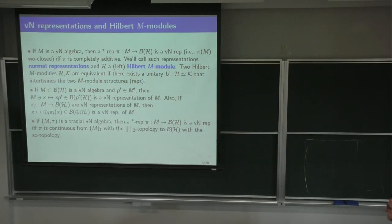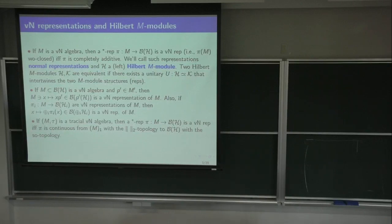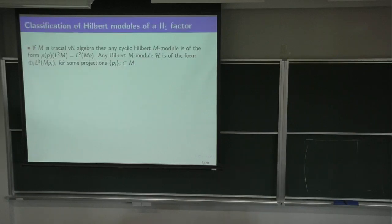For such a von Neumann algebra, first of all I want to point out that a star representation of it as a C*-algebra will be a von Neumann representation if and only if π is continuous from the unit ball of M with the norm-2 topology to B(H) with the SO topology. In other words, normality or complete additivity is equivalent to continuity in norm-2 on bounded sets, on the unit ball of M.